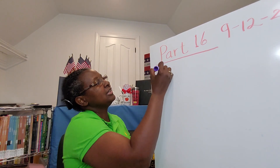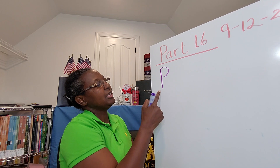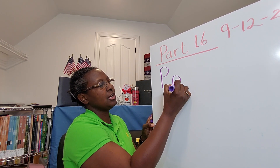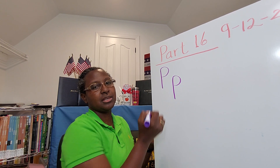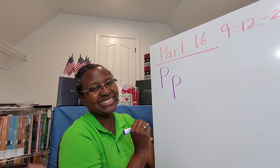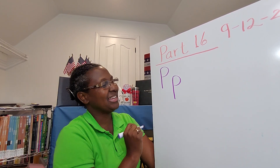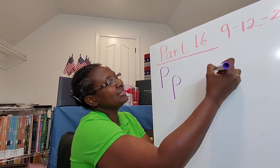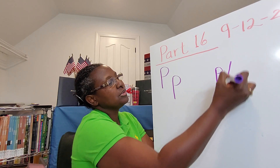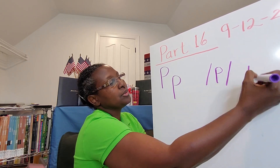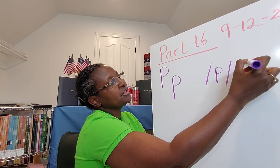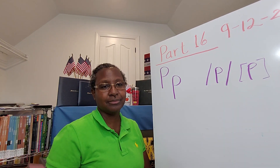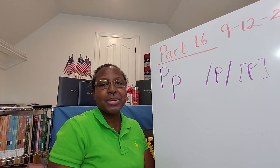That's another consonant, letter P. Here's our uppercase P, and here's our lowercase P. Big P and little P. Capital and lowercase P. When we look at the letter P, we can use our phonetic re-spelling or our International Phonetic Alphabet IPA to express the sound P.